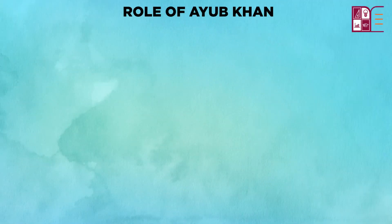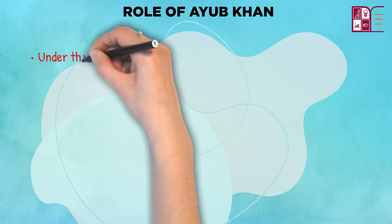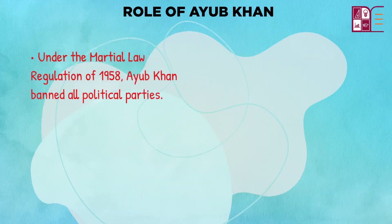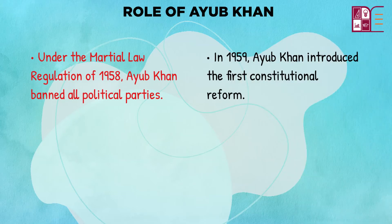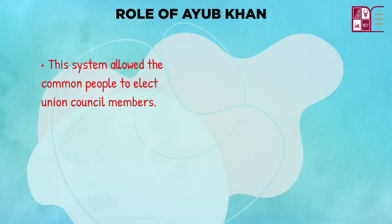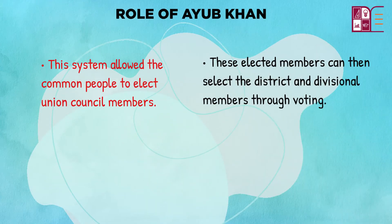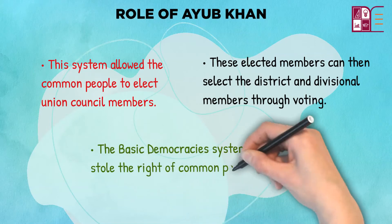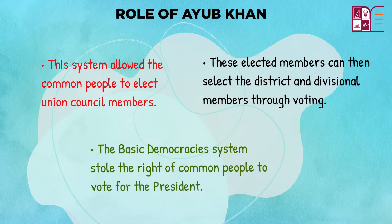Rule of Ayub Khan: Under the martial law regulation of 1958, Ayub Khan banned all political parties as the leaders were creating instability in the country. In 1959, Ayub Khan introduced the first constitutional reform — the Basic Democracies Order — which was a four-tier system. This system allowed the common people to elect union council members, and these elected members could then select the district and divisional members through voting. However, the Basic Democracies system removed the right of common people to vote directly for the president.